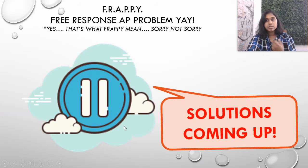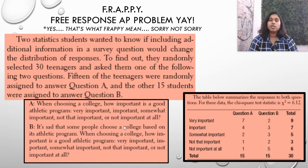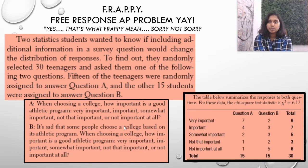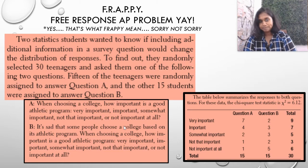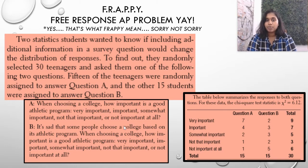Remember, solutions are coming up. All right, so two statistics students wanted to know if additional information changed the distribution of responses. To find out, they randomly selected 30 teenagers and asked them one of the following questions. 15 were randomly assigned to A, 15 were randomly assigned to B. A says when choosing a college, how important is a good athletic program? Very important, important, somewhat important, not that important, or not important at all.